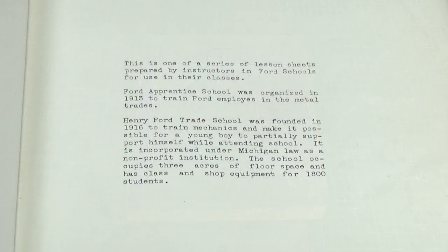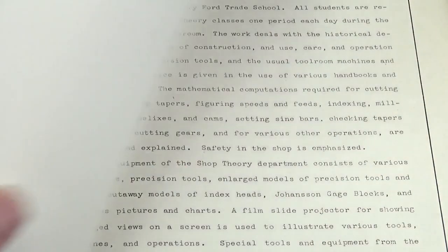This is what's basically written inside the front cover: This is one of a series of lesson sheets prepared by instructors in the Ford schools for use in their classes. The Ford Sprint at School was organized in 1913 to train Ford employees in the metal trades. Henry Ford Trade School was founded in 1916 to train mechanics and make it possible for a young boy to partially support himself while attending school.